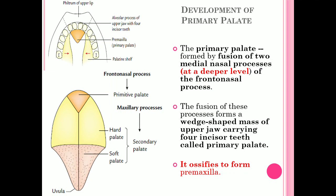The primitive or primary palate (pre-maxilla) is formed by the fusion of the two medial nasal processes at the deeper level of the frontonasal process. The frontonasal process forms medial and lateral nasal processes on each side of the nasal pit. The medial nasal process anteriorly forms the philtrum and nasal septum, and on the deeper side forms the pre-maxilla. Fusion of the two medial nasal processes creates a wedge-shaped mass carrying the four incisor teeth, which ossifies to form the pre-maxilla.